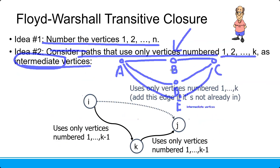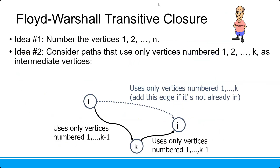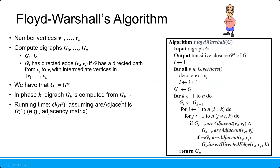We need to consider paths that use only certain vertices as intermediate vertices. If I want to check from I to J, I need to find any node K as the intermediate vertex. If there is a K, then we can define the transitive path. First, we need to know the number of vertices V1 until VN, then compute the digraph G0 through GN, where G0 equals the original graph G.